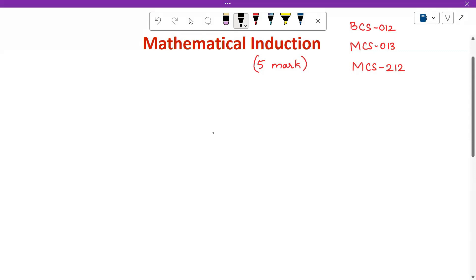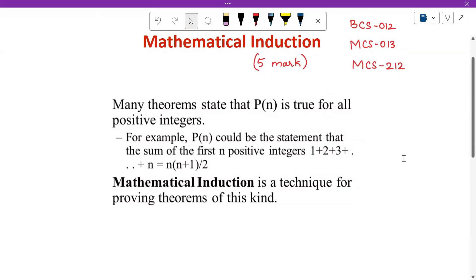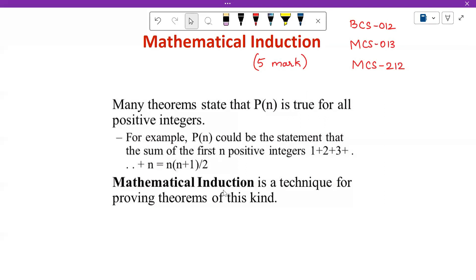We are going to see what this is about, how to solve questions, and the basic steps with two examples. Mathematical induction is a type of proof. Many theorems in math state that P(n) is true for all positive integers. The best example given is that the sum of the first n positive integers is 1 plus 2 plus 3 up to n, which equals n times (n+1) divided by 2. To prove this type of statement involving natural numbers, we use mathematical induction as a method of proof.